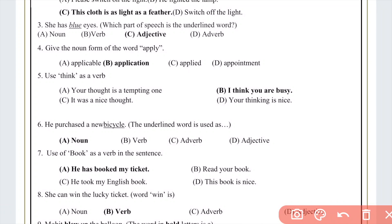Question five: Use 'think' as a verb. The word 'think' must be used as the main verb in the sentence, with no other verb present. Looking at the options, the right answer is: 'I think you are busy' — here no other verb is used, so 'think' functions as the verb.